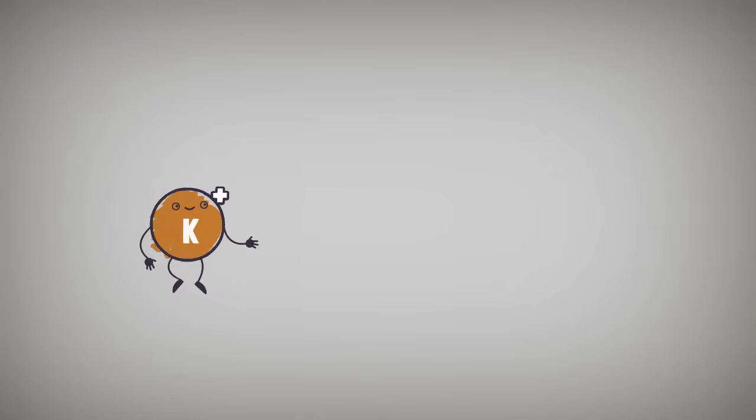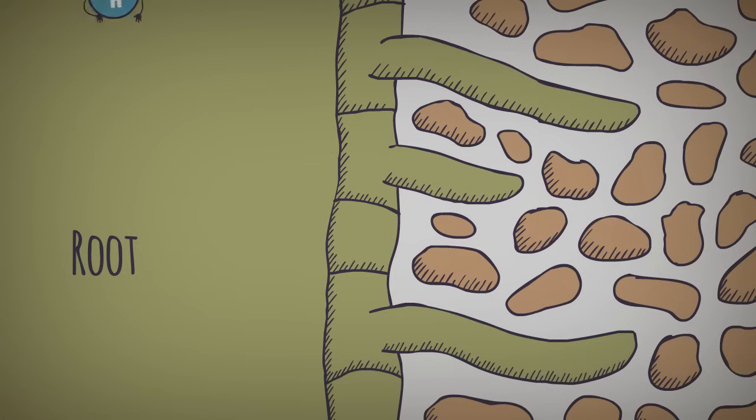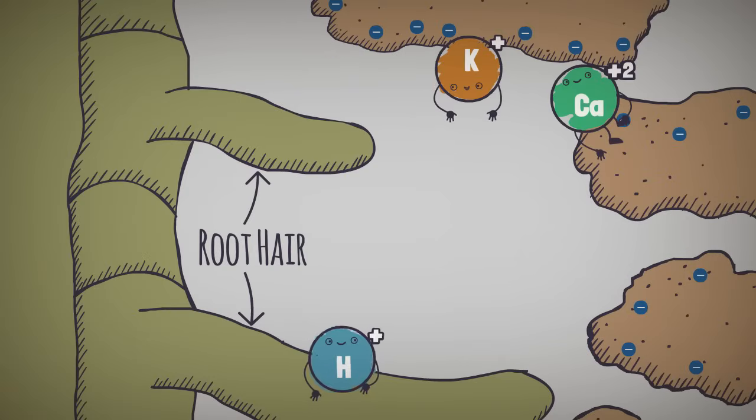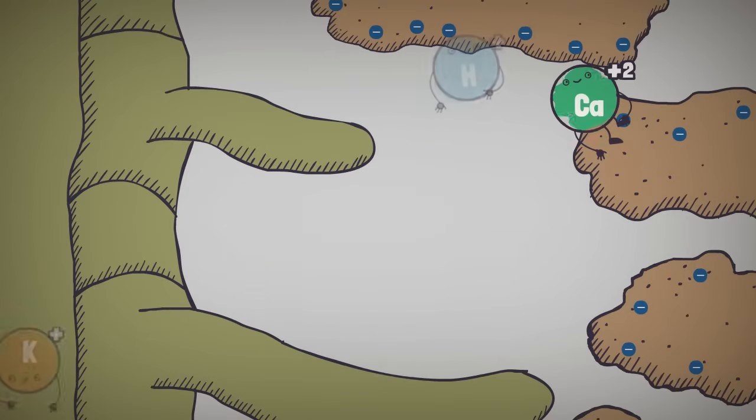So, back to cations. Basically, if a plant wants a nutritious cation like potassium, it will need to exchange it for another cation or cations of equal charge. Luckily, plants produce hydrogen cations that they can exchange. One hydrogen cation for one potassium cation. Easy enough.